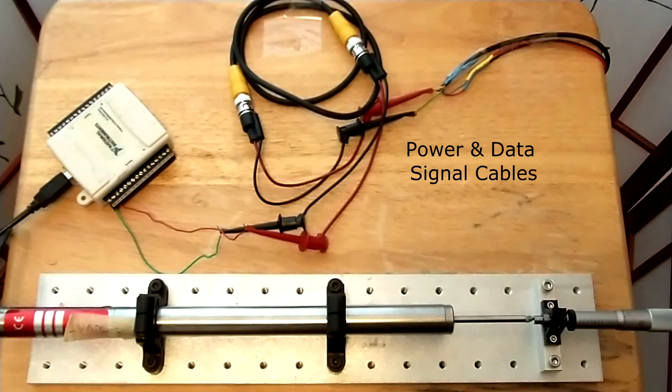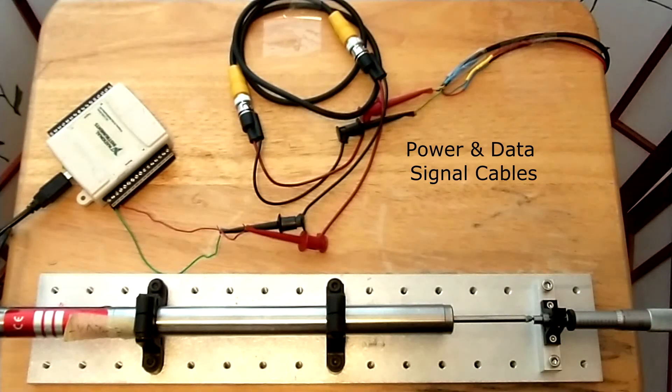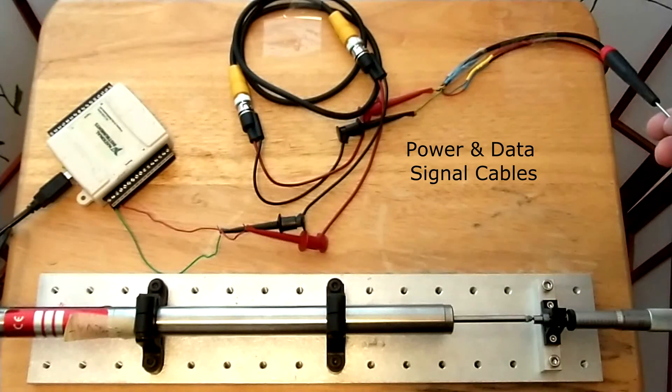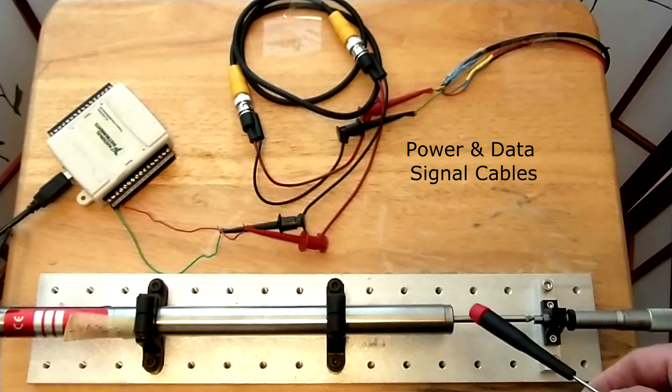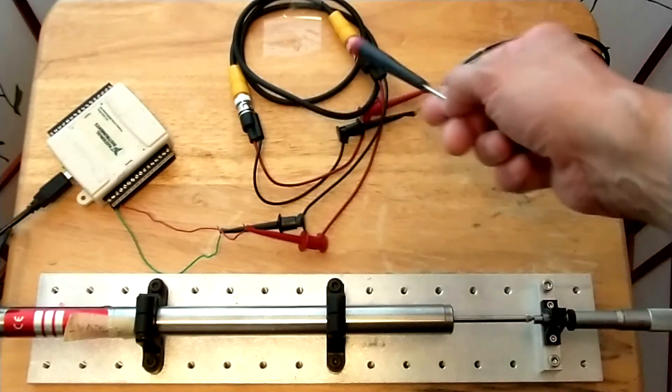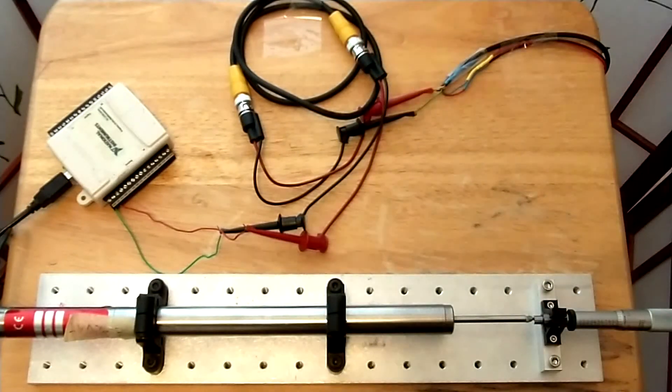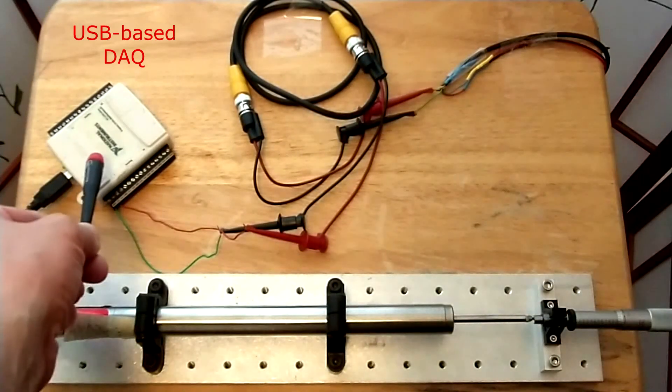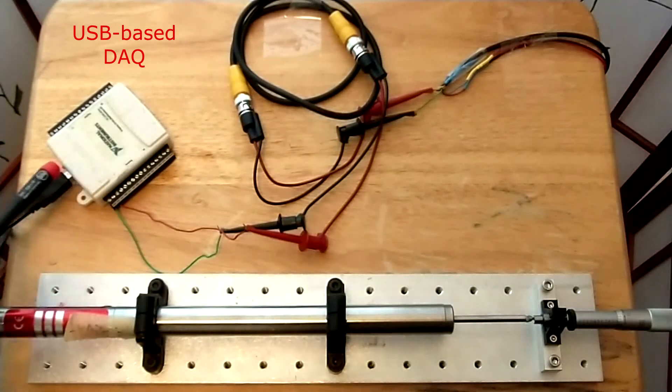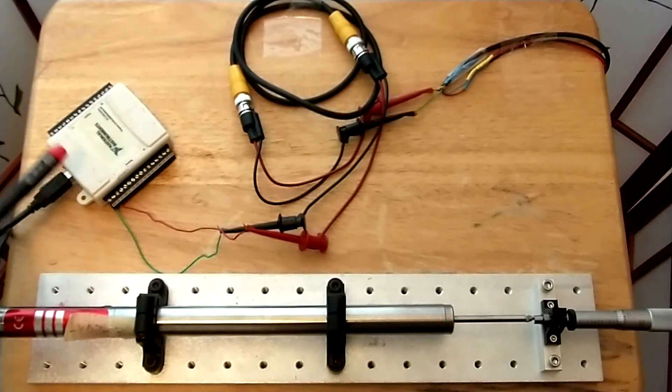Also, to support this equipment, we have a series of cabling. This particular cable will provide power to the LVDT. We also have a connection set here, through these connectors, to our USB-6009 device. This will be our DAC that we'll be using today.